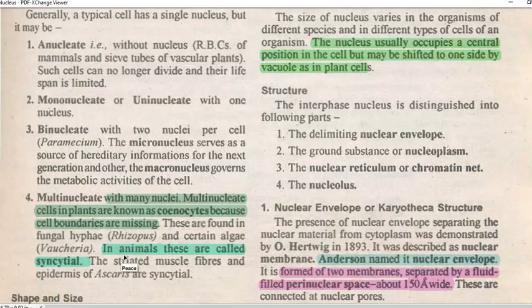How is that possible? The nucleus is present for some period, after which it vanishes. Examples include RBCs of mammals and sieve tubes of vascular plants that completely lack the nucleus. That is the reason why these cells can no longer divide and their lifespan is limited.